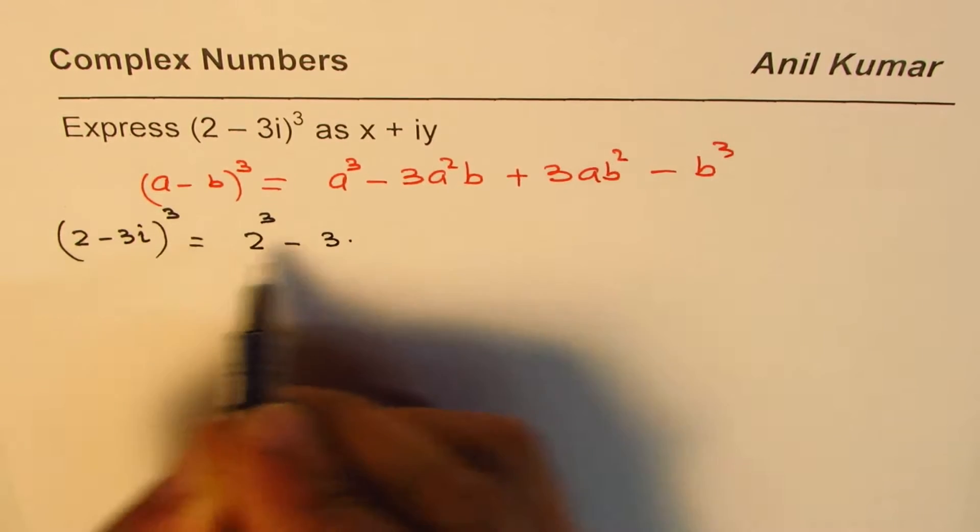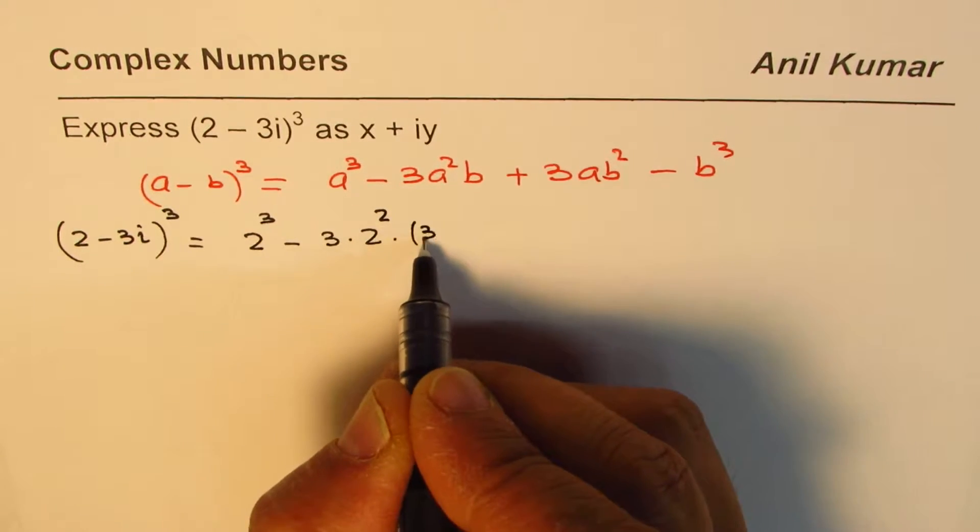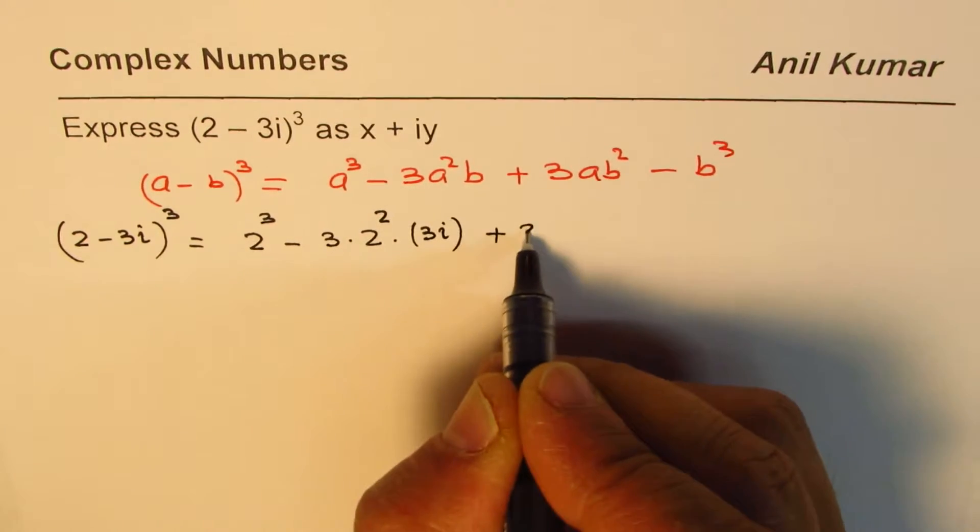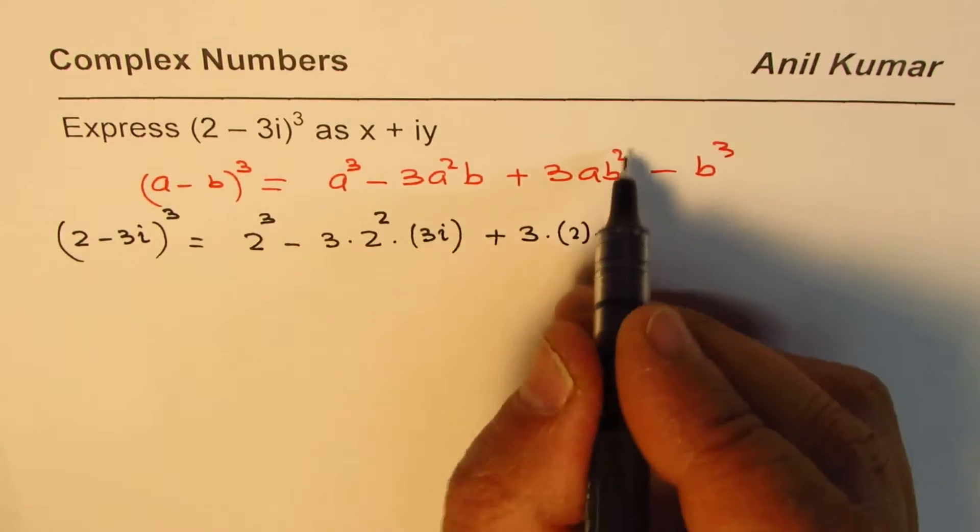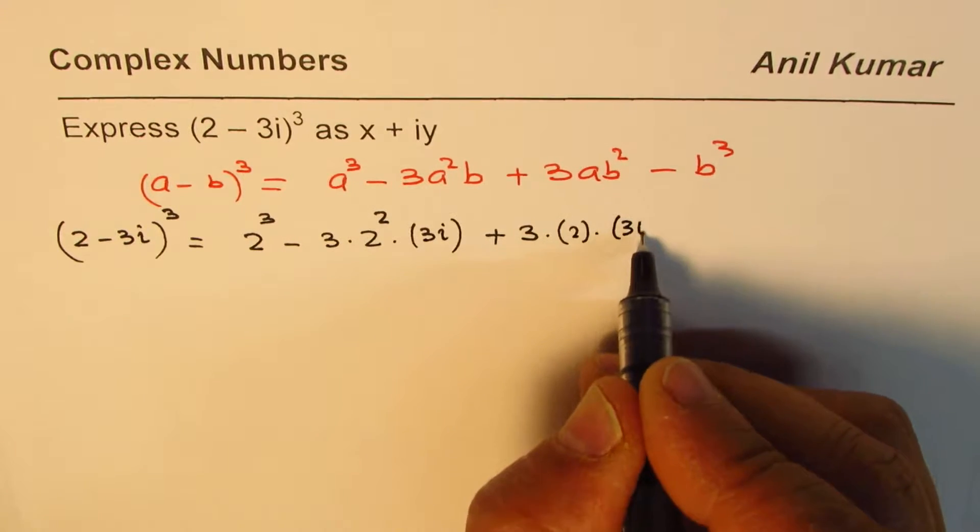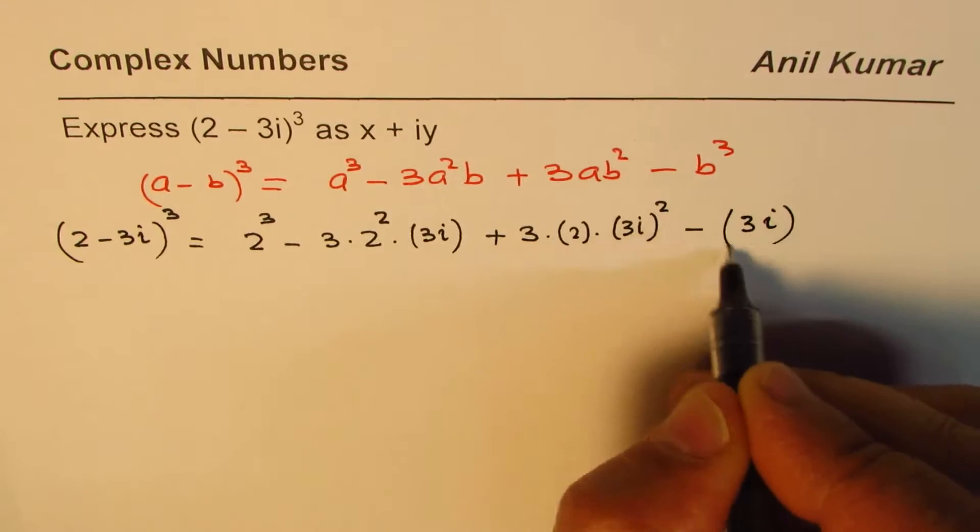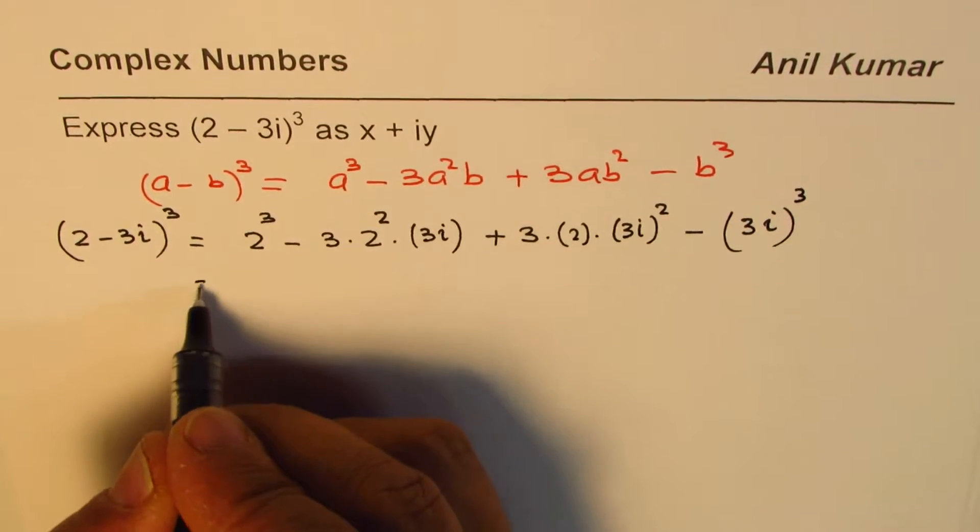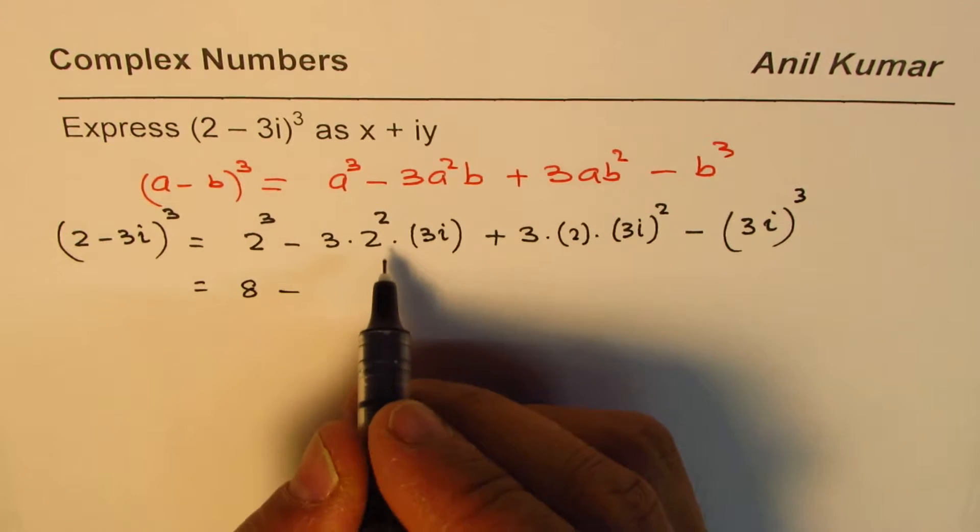Plus 3 times 2 times (3i)² minus (3i)³. 2³ is 8, 4 times 3 times 3 is 36i.